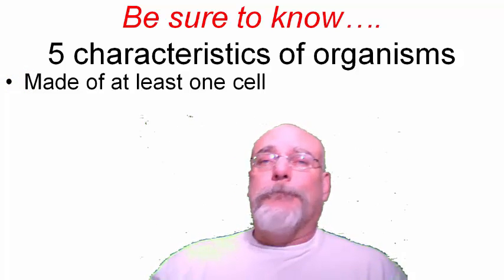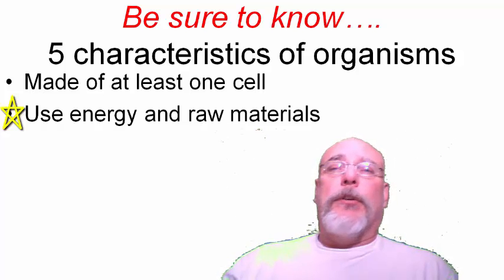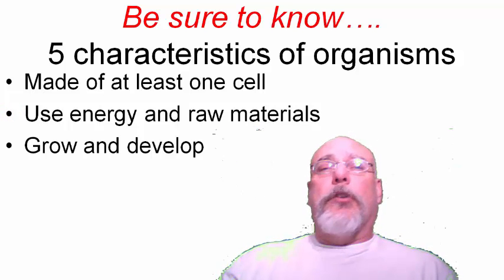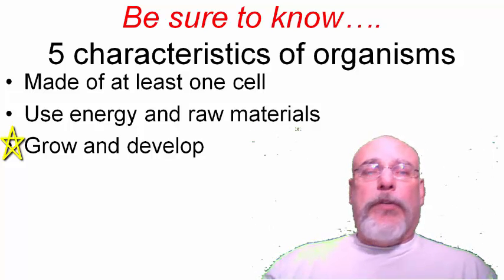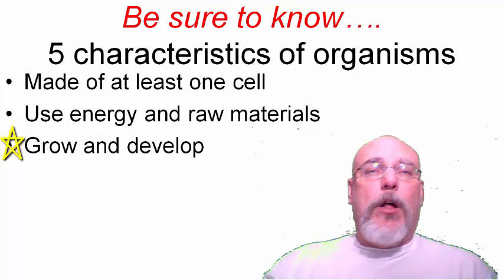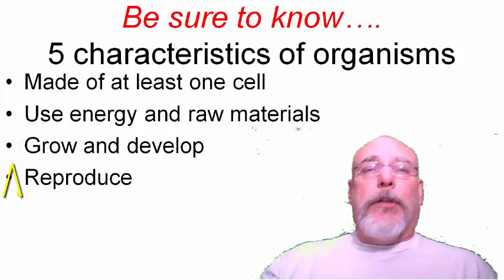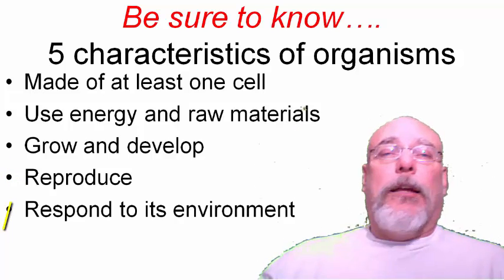Second: all living things use energy and raw materials — things like proteins, fats, and carbohydrates — to grow, move, and produce energy. Third: organisms grow and develop. Growing is physical, like going from five feet to six feet tall. Developing is behavioral, like a bird learning how to fly. Fourth: living things are able to reproduce. An individual doesn't have to reproduce, but the species as a whole must be able to, or it will go extinct.